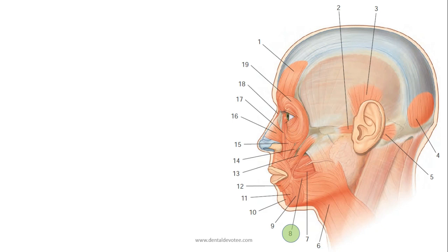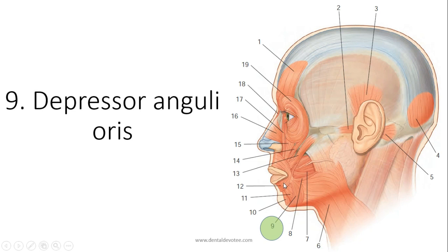Another muscle labeled as number eight is risorius. Labeled as number nine we can see this muscle. It originates at the angle of the mouth and runs below up to the body of mandible in the mental region. It depresses the angle of mouth so its name is depressor anguli oris.